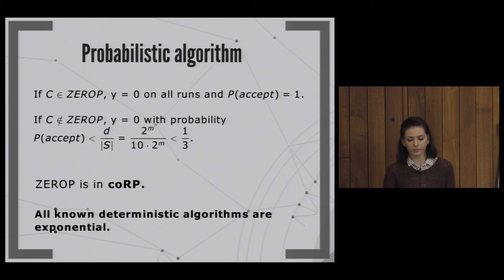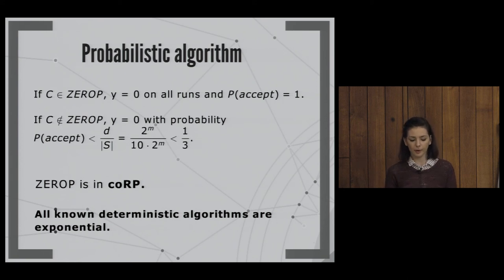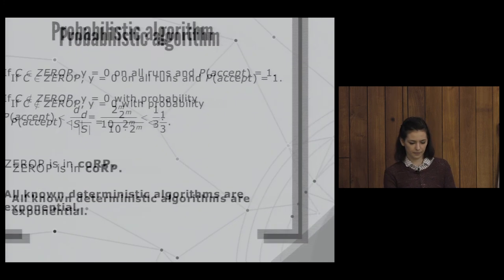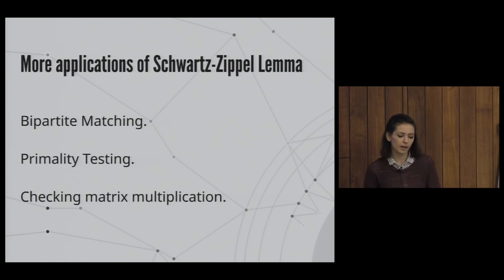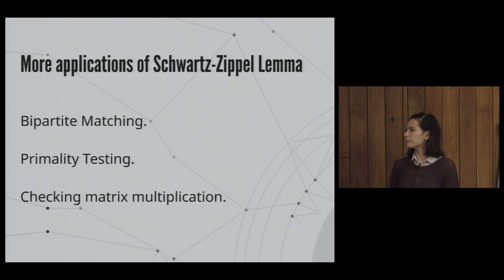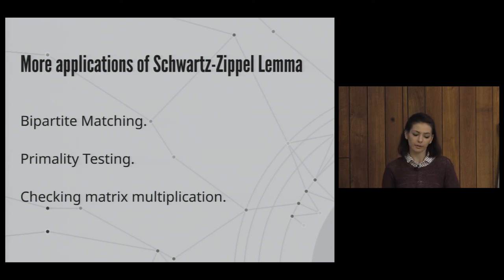All known deterministic algorithms for this problem are exponential, making this an example where randomness gives more power. However, this doesn't prove P ≠ BPP — it just means we don't know a good deterministic algorithm. The important point is that the Schwartz-Zippel lemma gives very simple algorithms for many problems, and since the error can be made small by running the algorithm multiple times, randomness is very useful in practice.